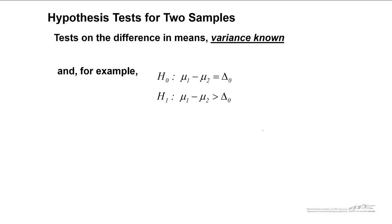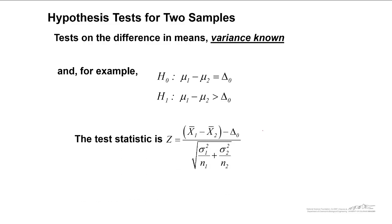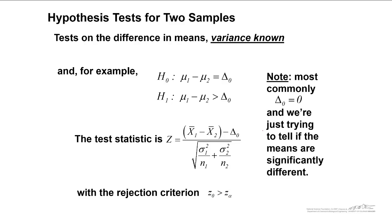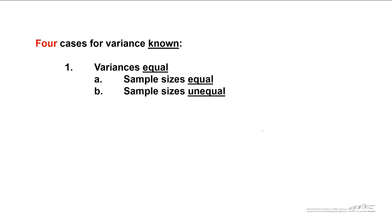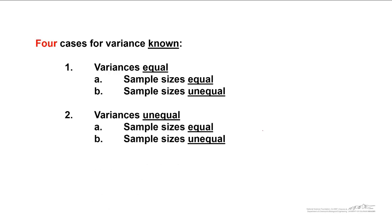Let's take a look at how we might implement this test. For a simple upper-tailed test, the test statistic is calculated as follows: we reject the null hypothesis if our test statistic z-naught is greater than z-alpha. Commonly the difference is zero, and we're just trying to tell if the means are significantly different from one another. We can also have a lower-tailed test — we reject the null if the test statistic is less than negative z-alpha. For the variance-known case, there are actually four different options: variances equal with equal or unequal sample sizes, and variances unequal with equal or unequal sample sizes.